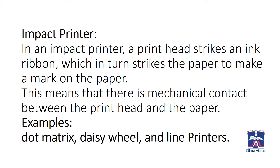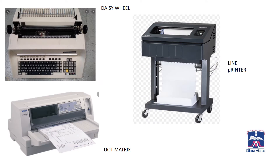In an impact printer, a print head strikes an ink ribbon, which in turn strikes the paper to make a mark. This means there is a mechanical contact between the print head and the paper. Examples are dot matrix, daisy wheel and line printers. Here you can see the examples: daisy wheel, line printer and dot matrix printer.